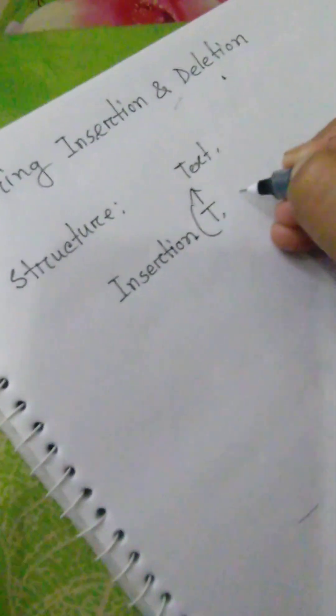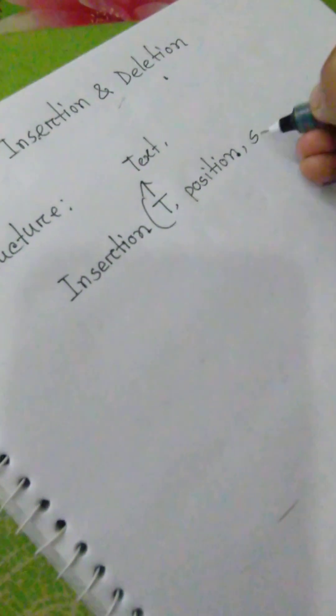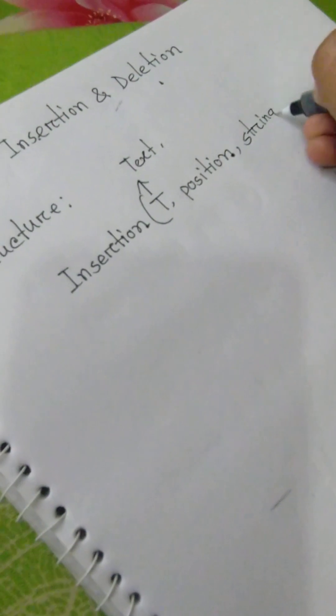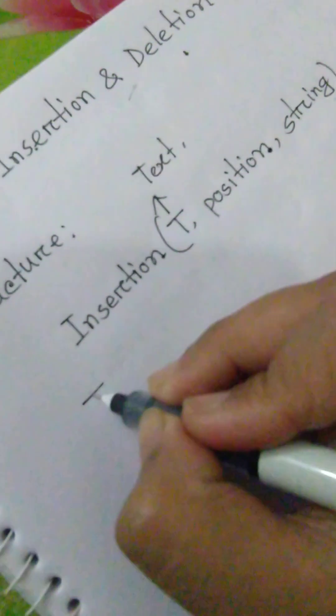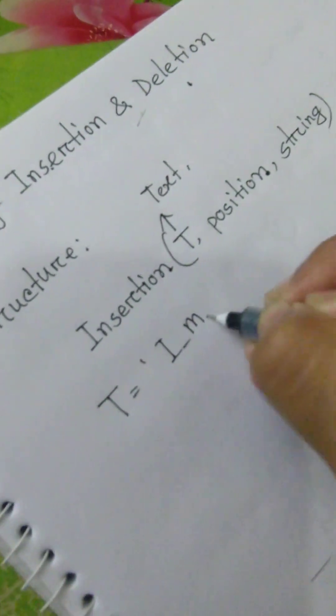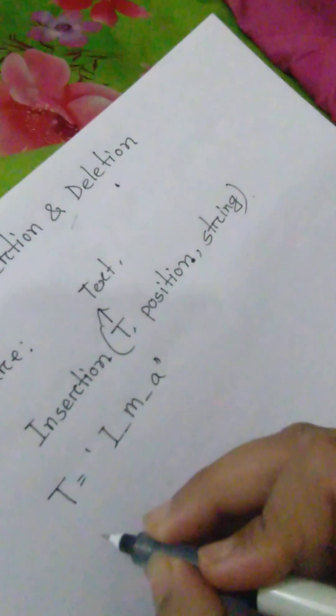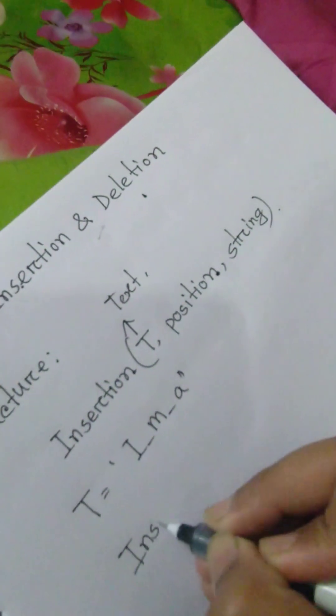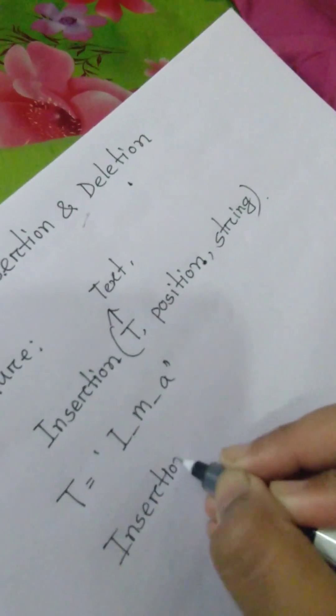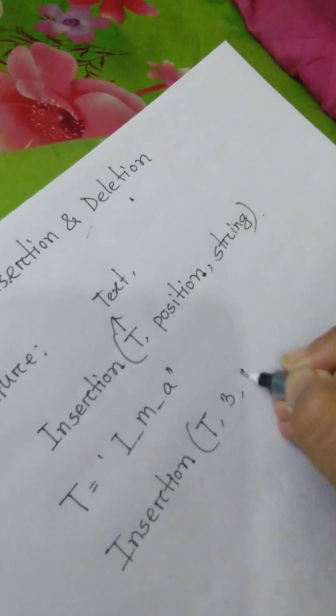String insertion: the structure of this is insertion, then T, then position in which position we want to add the string, then the string. Here T is 'I am a' and the insertion position is T, 3, 'a'.